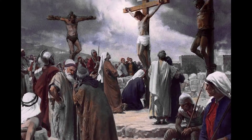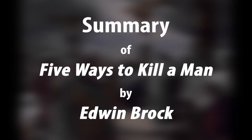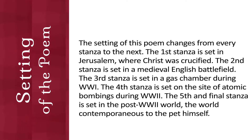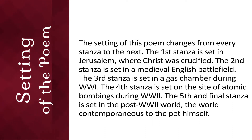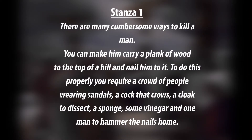Welcome to Beaming Knots. Today we're going to look at the summary of the poem 'Five Ways to Kill a Man' by Edwin Brock. The setting of this poem changes from every stanza to the next. The first stanza is set in Jerusalem where Christ was crucified, the second in a medieval English battlefield, the third in a gas chamber during World War One, the fourth at the atomic bombings of World War Two, and the fifth in the post-World War Two world, contemporaneous to the poet himself.